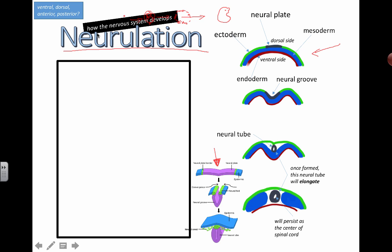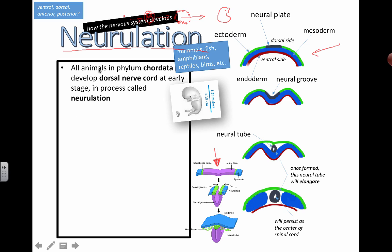So once again, neurulation is basically how the nervous system develops. So let's start by looking at this first point here.